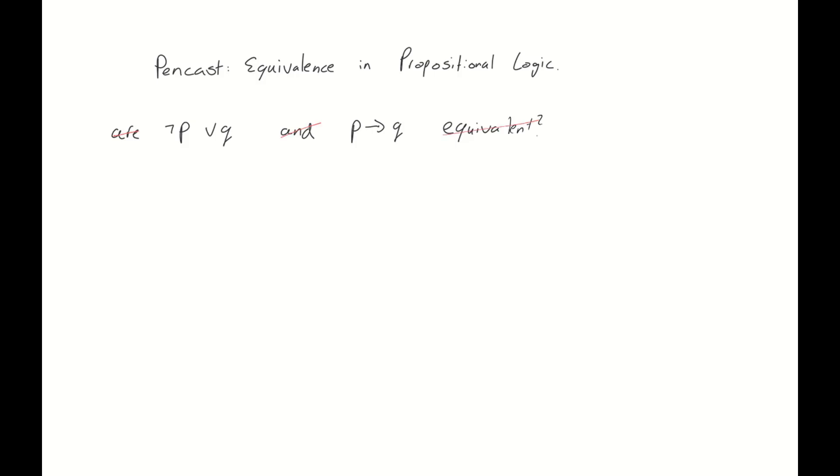Now in English we would write that like this but in logic we have a difference. We use the equivalent symbol, the one you're familiar with consisting of three lines, and then we put a question mark on top of it because we're not sure yet whether these two are equivalent. That's the question we are asking.